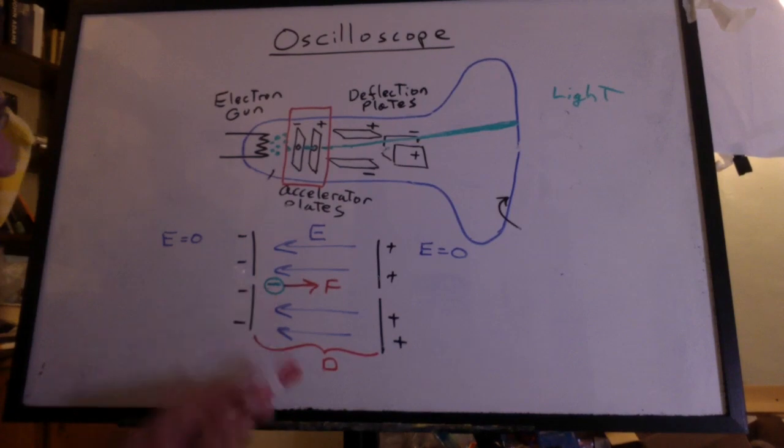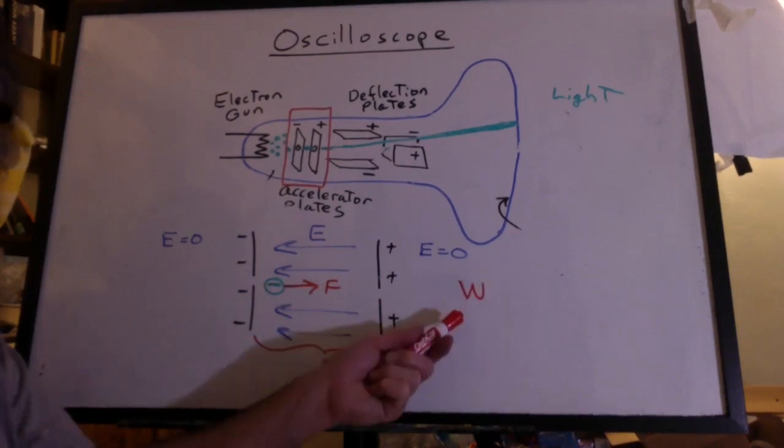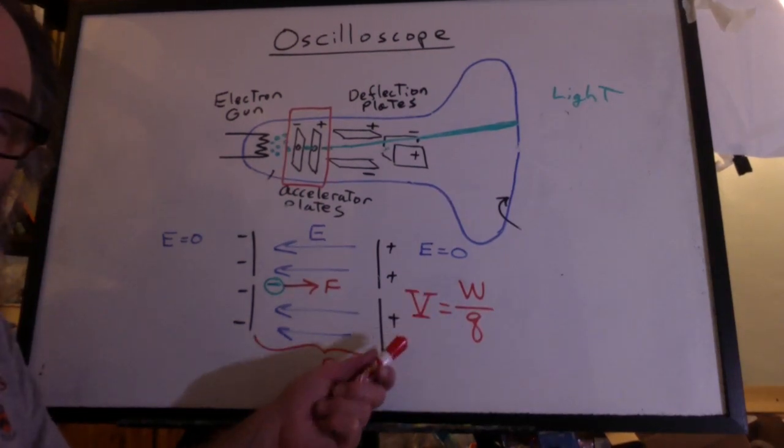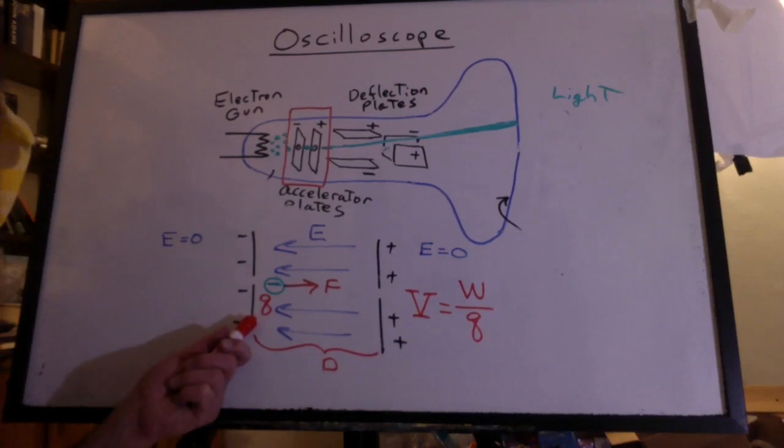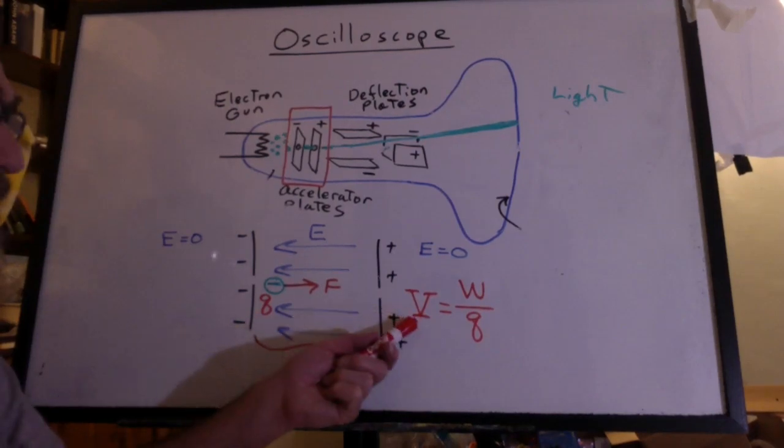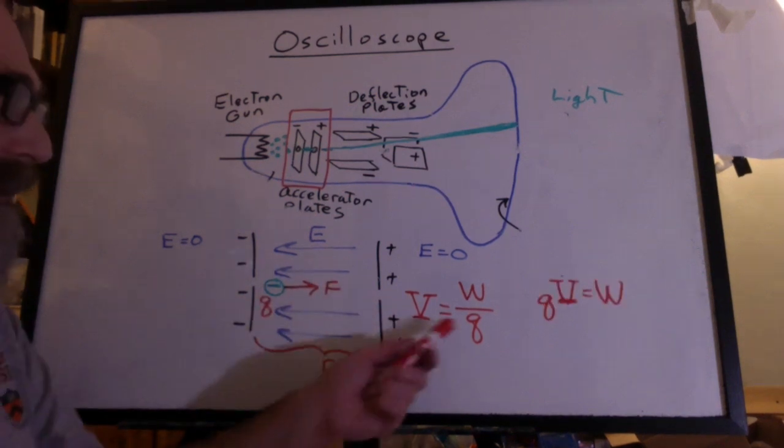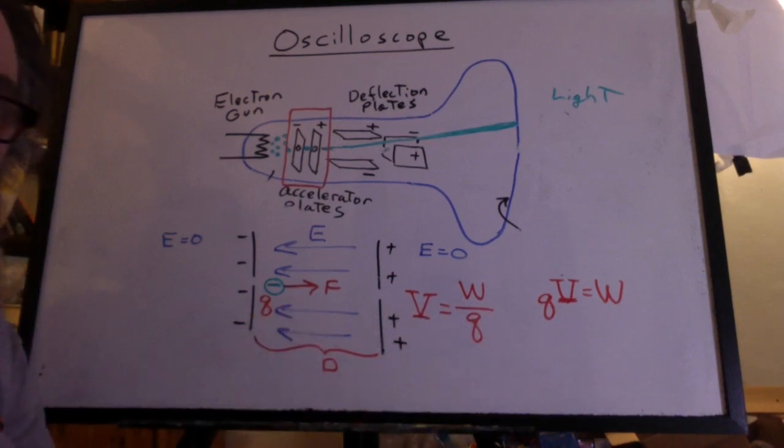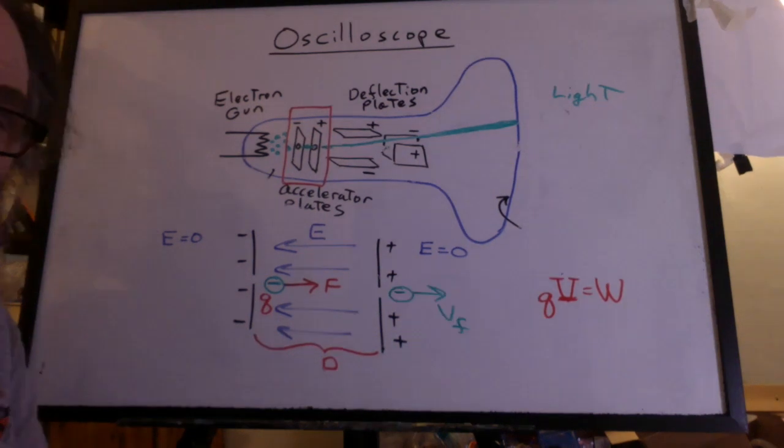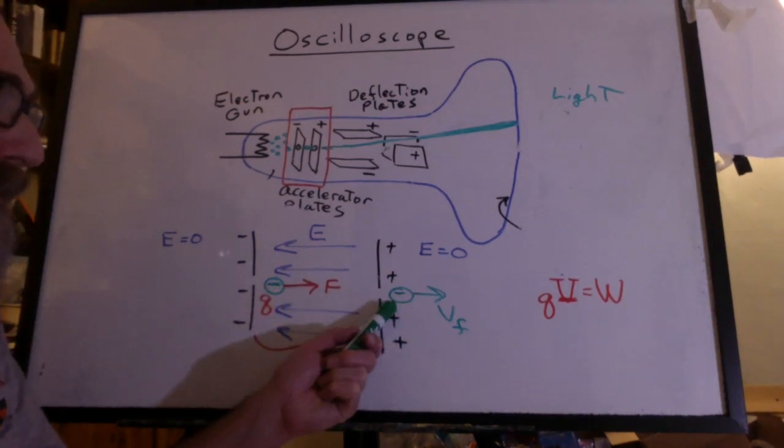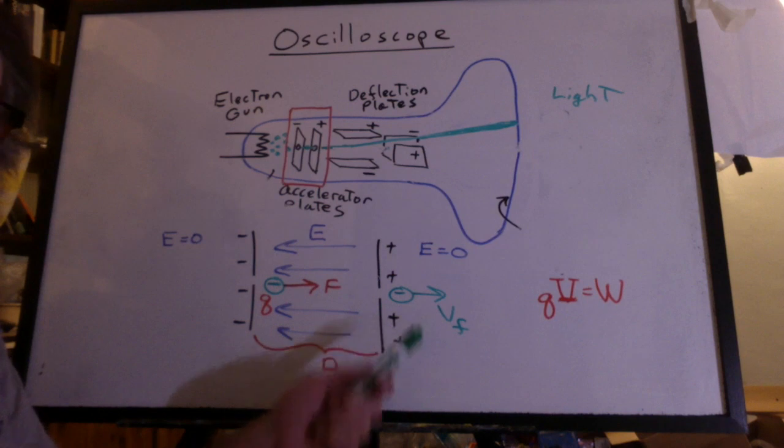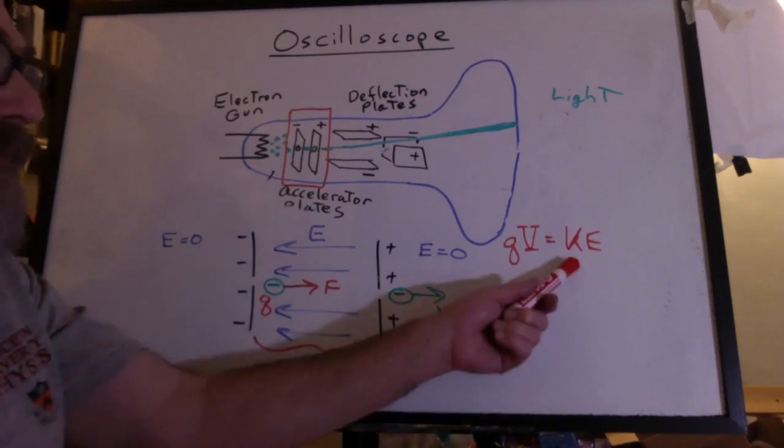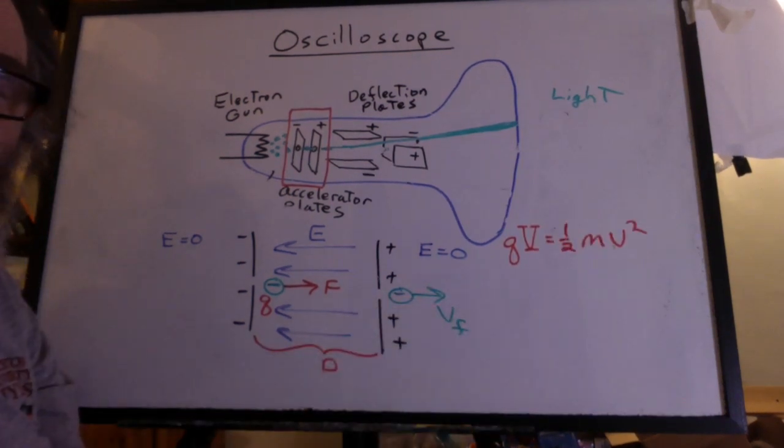The force on that electron times the distance it acts is work. The work per charge is voltage. Now we know what the charge is on an electron. And we're going to know the voltage across these plates. If I multiply the Q times the voltage, I'm going to get the work done to the charge. Where do you think that work is going? Yeah, the electron is speeding up the whole way through here. It's going to have a final velocity. The work done to the charge is turning into kinetic energy. And of course the kinetic energy is one half mv squared.